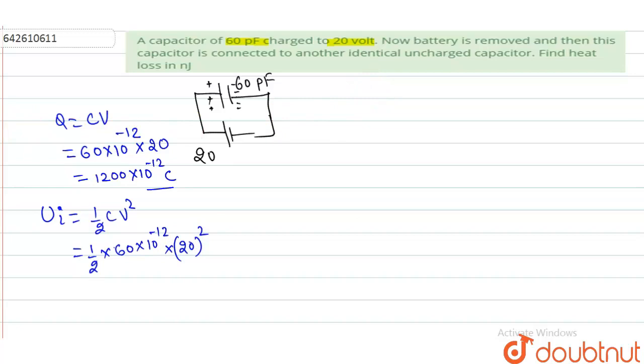in the other condition, what does it say? Battery is removed and another capacitor of same 60 picofarad is there. So now they have their common potential. We have to find the common V. V common is what? If suppose this is V,